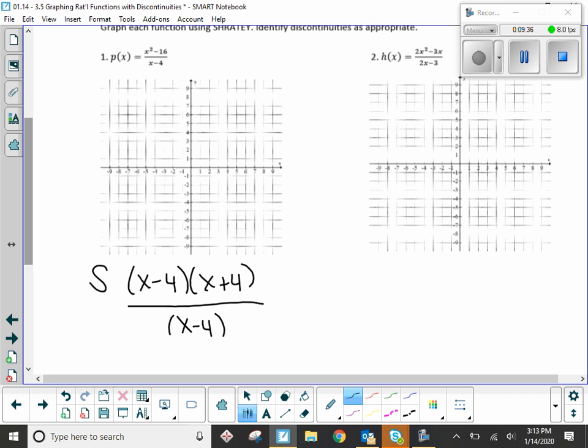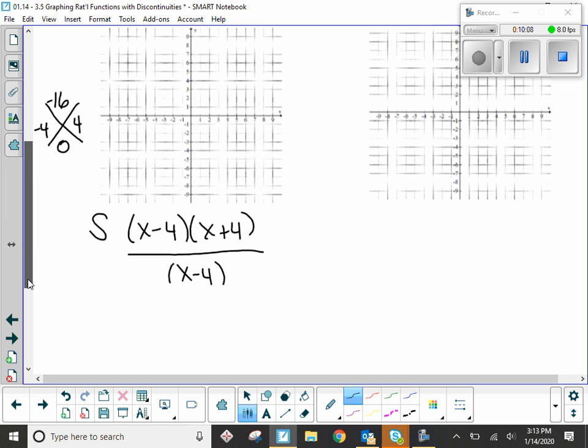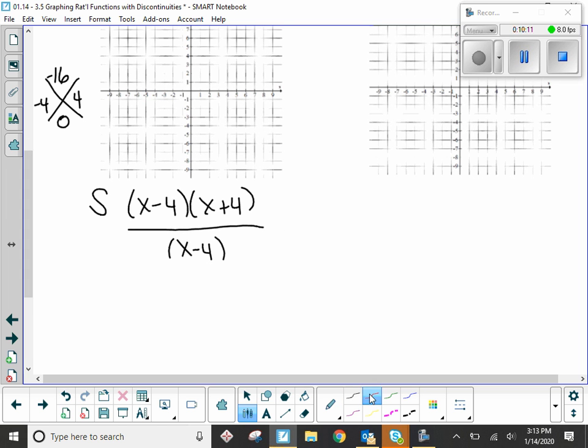On the off chance that you never remember or recognize difference of two squares, you can always do cross method here, because you're basically saying what multiplies to AC, which is negative 16, and adds to B, there's no B term, so you know that it is 0. So what multiplies negative 16 adds to 0? 4 and negative 4, which is the same as difference of squares. So something happens here that hasn't happened in all of our other strategies so far. Cancel. What cancels here? The X minus 4. It's the same on top and bottom. What are you left over with? X plus 4. This is your simplified form.